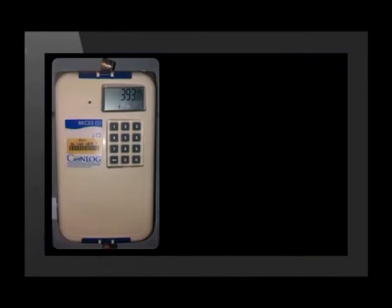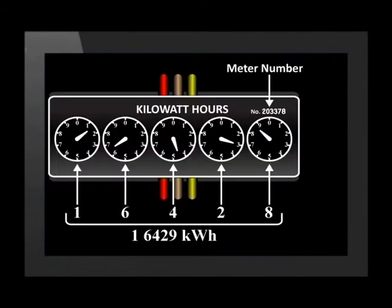Electricity can be either paid for in advance using a prepaid meter, or paid for in arrears. In this case, the customer will receive an account for electricity used. This amount will be based on the amount of electricity used in the month, which will be read from the electricity meter.